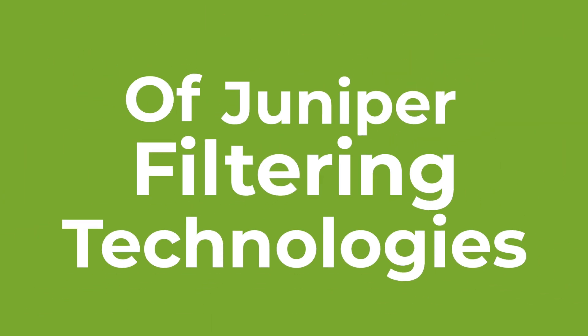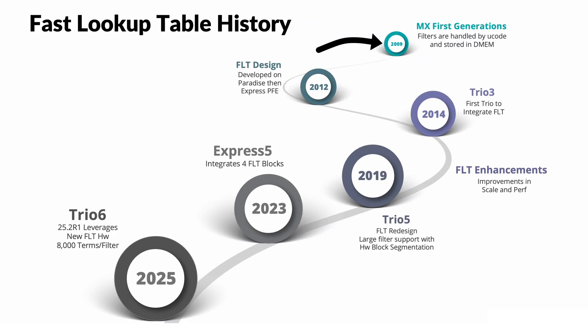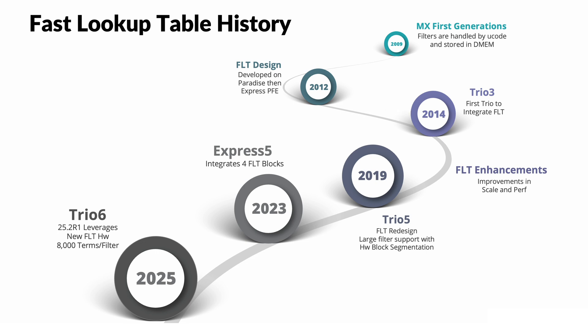On the left side, we show how the FLT block is integrated into the Express pipeline, and on the right side, its integration into the TRIO ASIC. Here is a quick look at the history of FLT. In the early days of TRIO, filtering was handled by the ASIC's microcode — this is still the default method today and has seen many improvements over time. The FLT block was originally designed for the Express ASIC family, and only starting with the third generation of TRIO did we begin to bring FLT concepts into TRIO as well. More recently, the FLT block has been enhanced on both TRIO and Express, allowing us to support billions of operations per second on Express 5 and to handle very large and complex filters on TRIO 6, without any performance degradation.